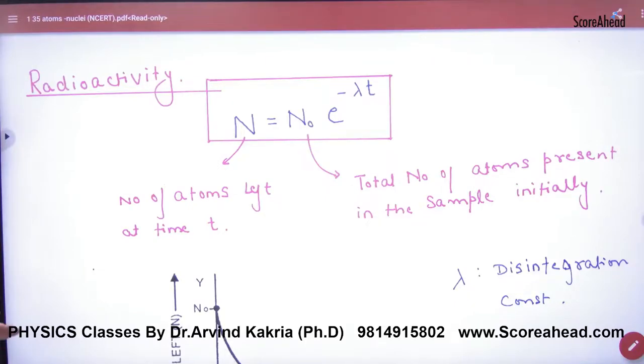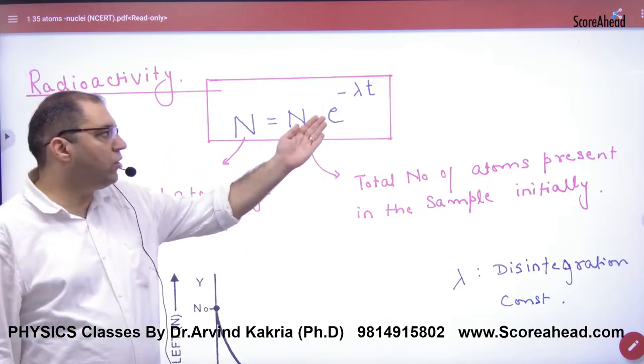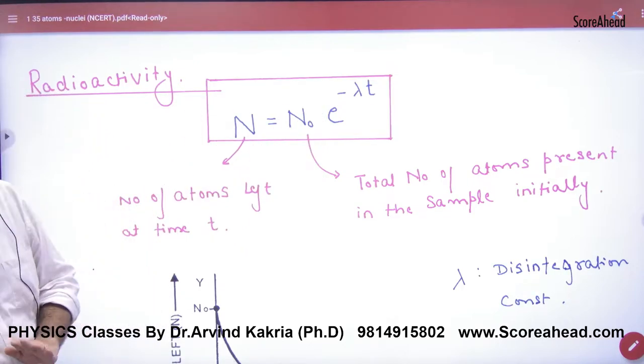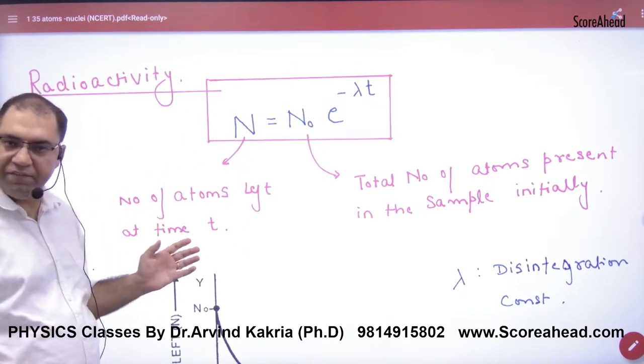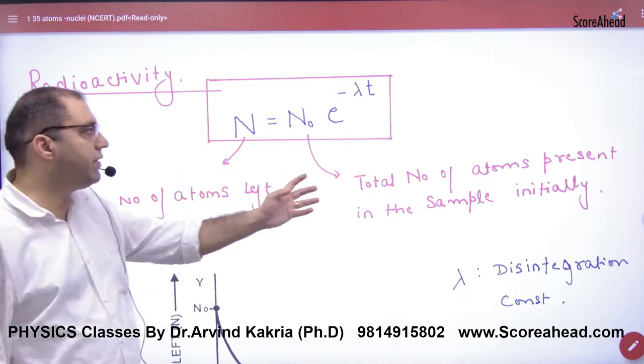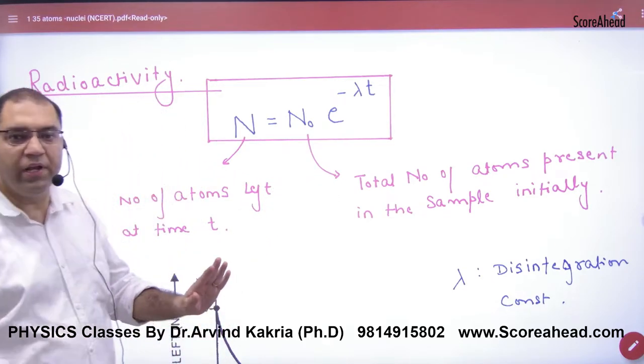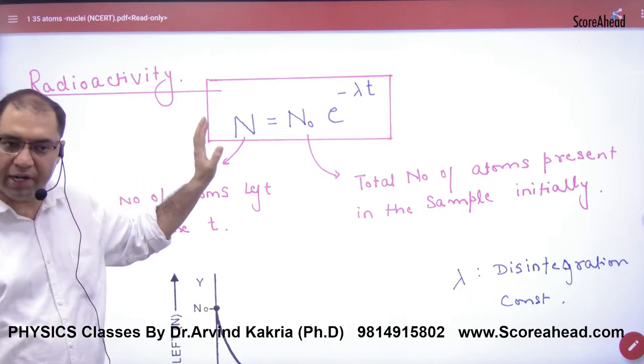So in radioactivity, what did we first result? N is equal to N₀ e raised to power minus lambda t, where N means number of atoms left at time small t and N₀ means initially present. So let us write proof from booklet NCERT booklet here.